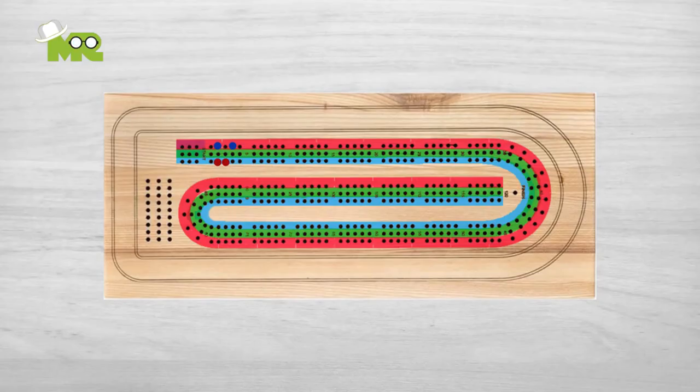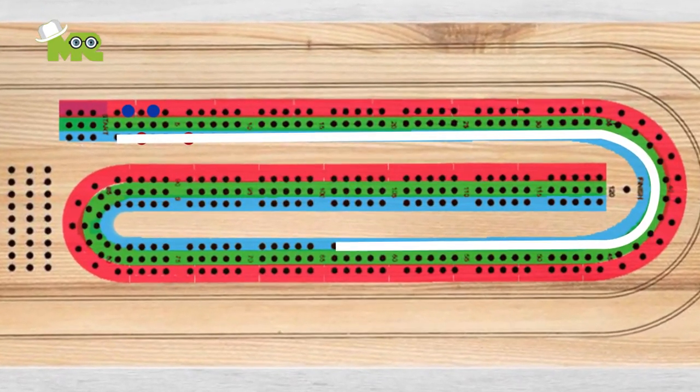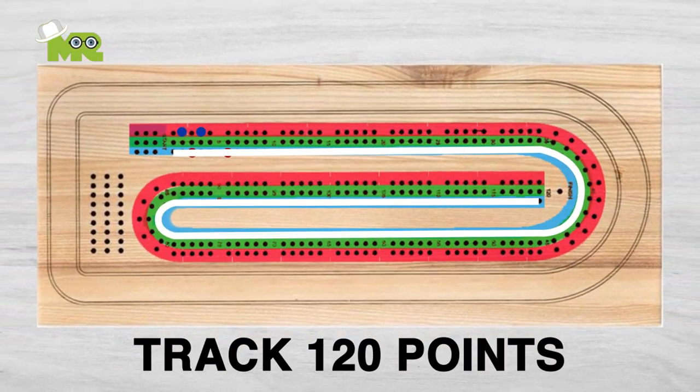To keep track of the score, the farthest back peg is moved in front of the current score peg by the number of points scored. The peg travels down the outside of the board then travels back on the inside of the board, looping around twice to a track of 120 points.